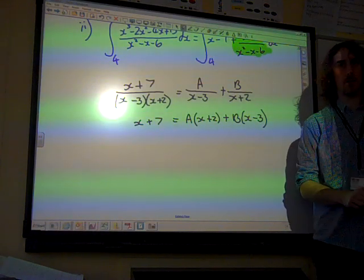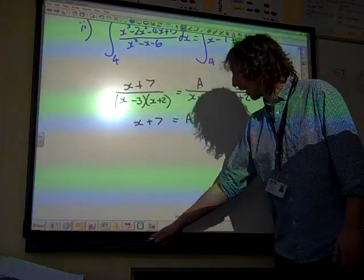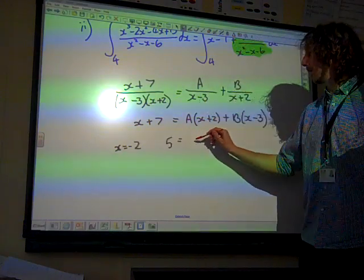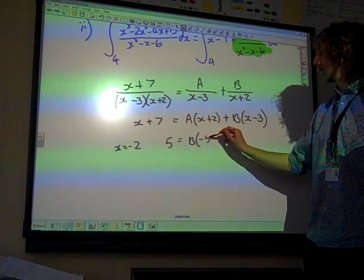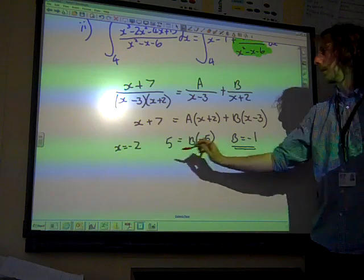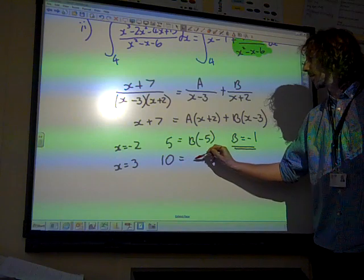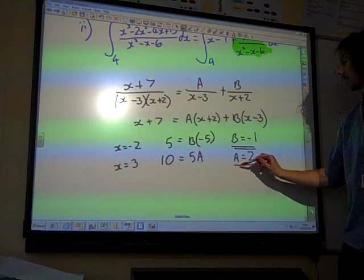If we multiply through by the denominator, it looks like that. We pick our values to substitute in. They're going to be X equals minus 2, giving us 5 is B times minus 5, so B is negative 1. The other one would be 3. Subbing 3, we get 10 is 5A, so A is 2.